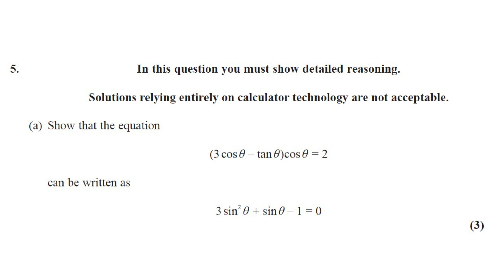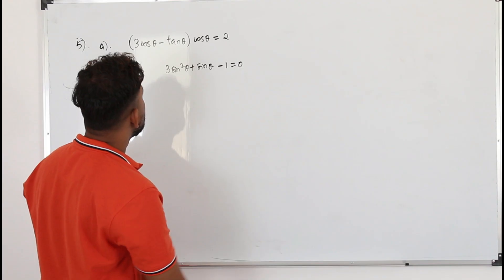Show that the equation 3 cos θ minus tan θ times cos θ equals 2 can be written as 3 sine squared θ plus sine θ minus 1 equals 0. This question is worth 3 marks.